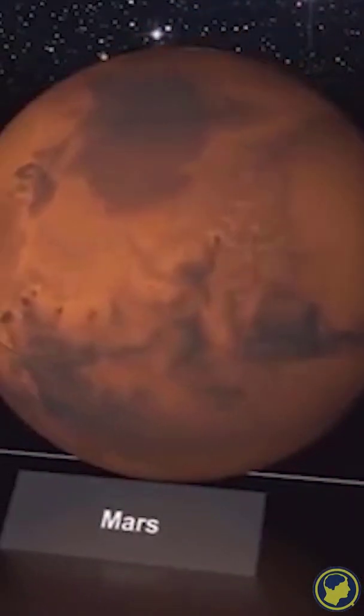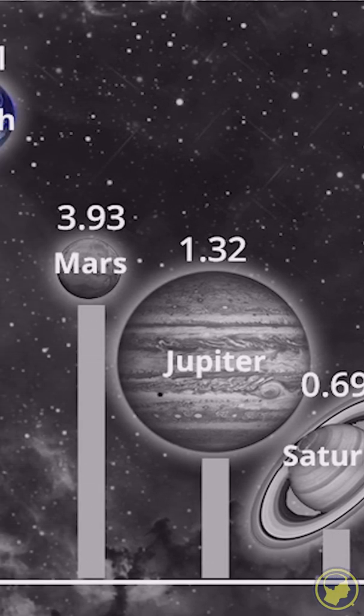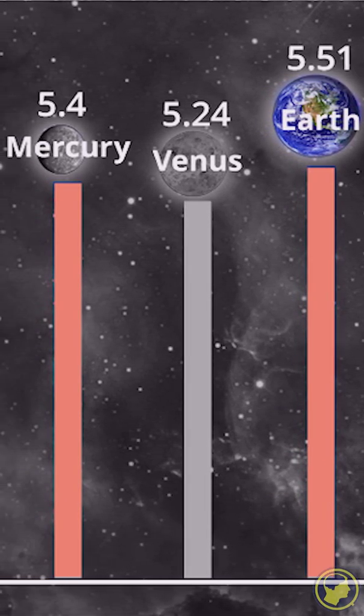We know that the smaller a planet, the lower the force of gravity. However, density is also a factor, and Mercury happens to be the second densest planet after Earth.